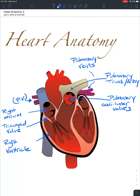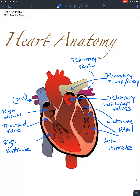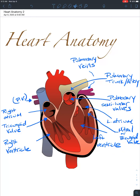The pulmonary veins drop blood into the left atrium, and from there blood is going to proceed into the left ventricle. That'll be moving through another set of valves known as the mitral valve, also called the bicuspid valve.